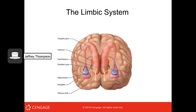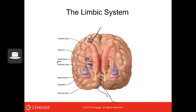The limbic system includes the cingulate gyrus, thalamus, hypothalamus, mammillary bodies, hippocampus, amygdala, and olfactory bulbs — all forming a ring around the brain stem.